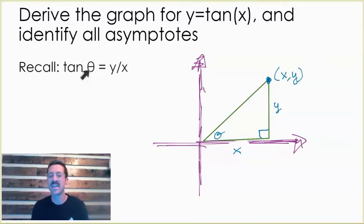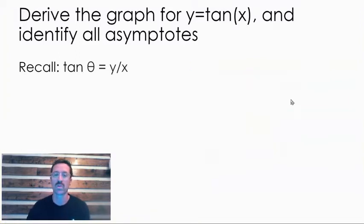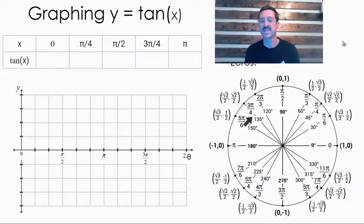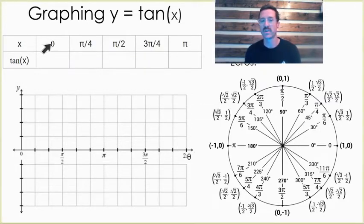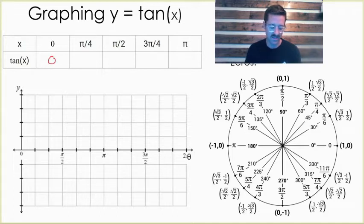We're going to start by graphing y equals tan x using our unit circle. We're looking at how y divided by x changes as our angle of rotation changes. We'll start at zero radians. At zero radians, y divided by x is zero divided by one, which is zero.